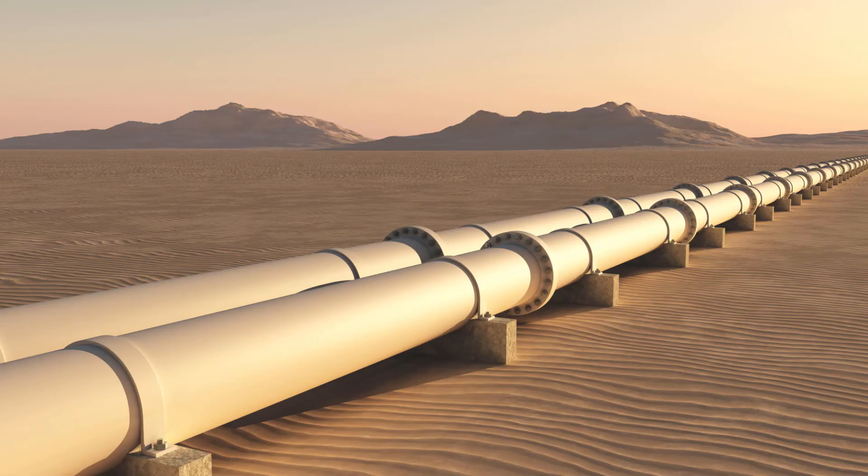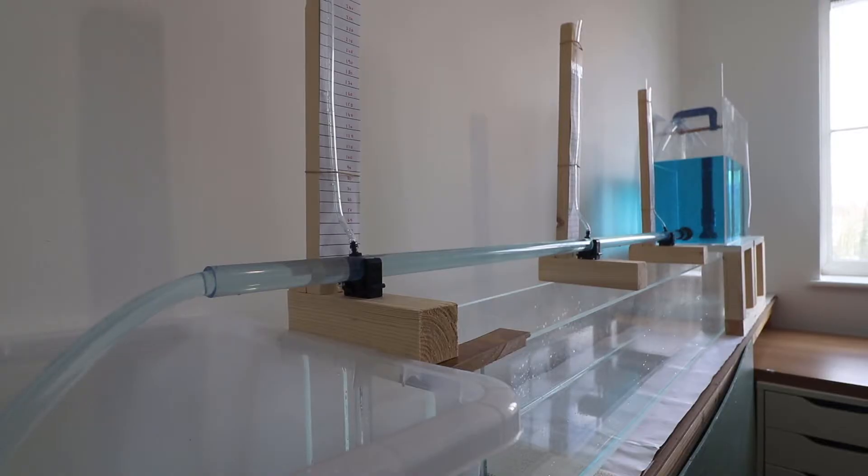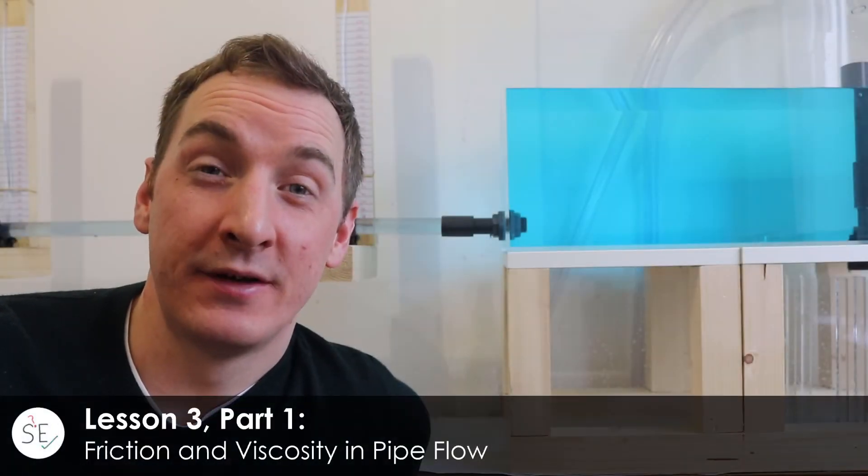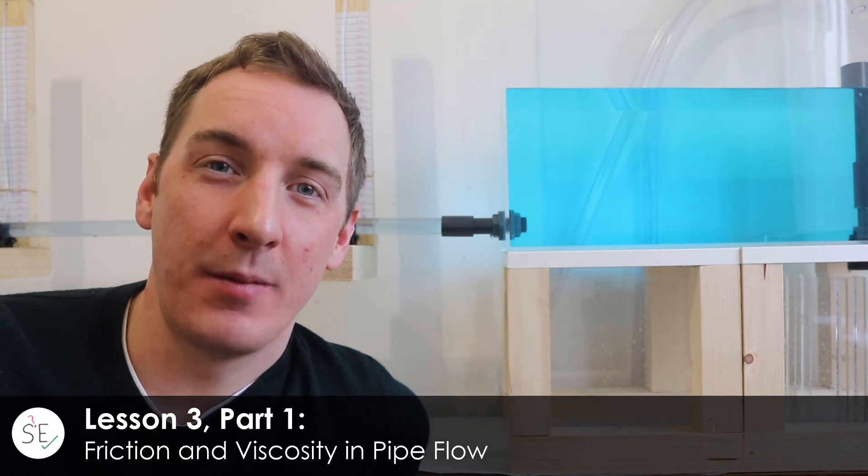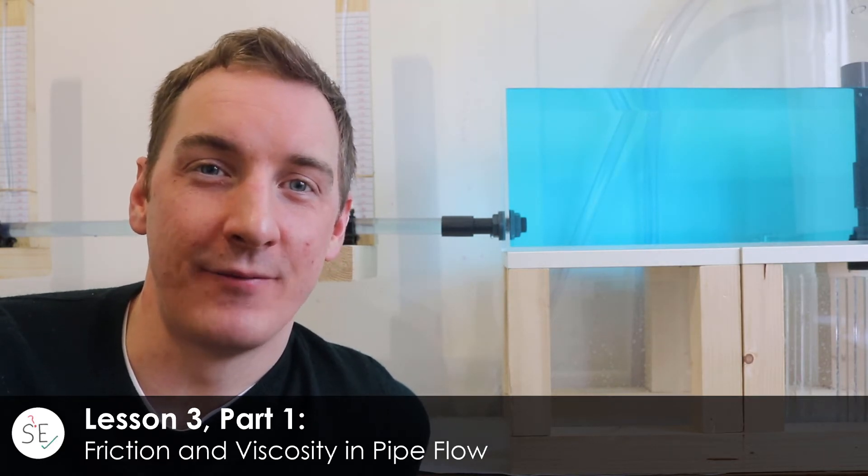So we need to start to think about and understand the processes in real pipe flows that lead to energy losses. In this lesson we're going to look at what happens when water flows down a pipe in the real world, and we're going to start by looking at the effects of friction and viscosity.